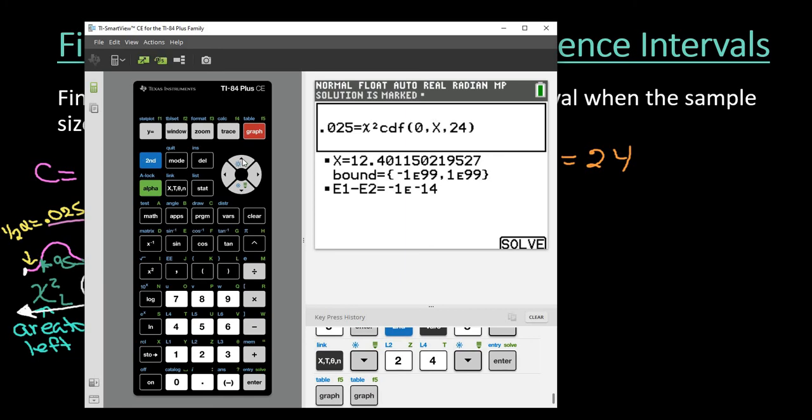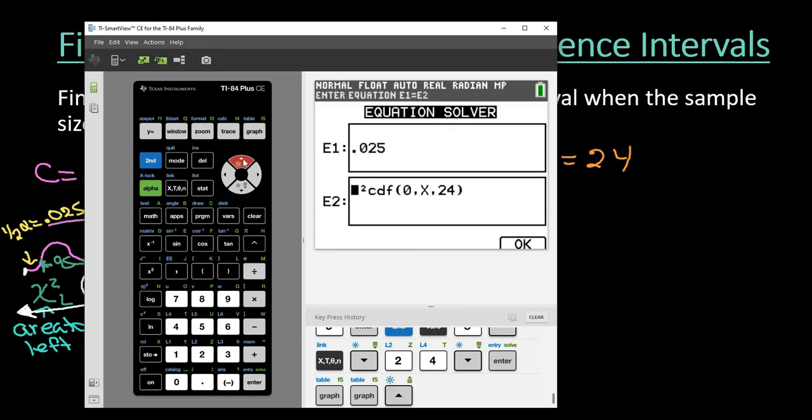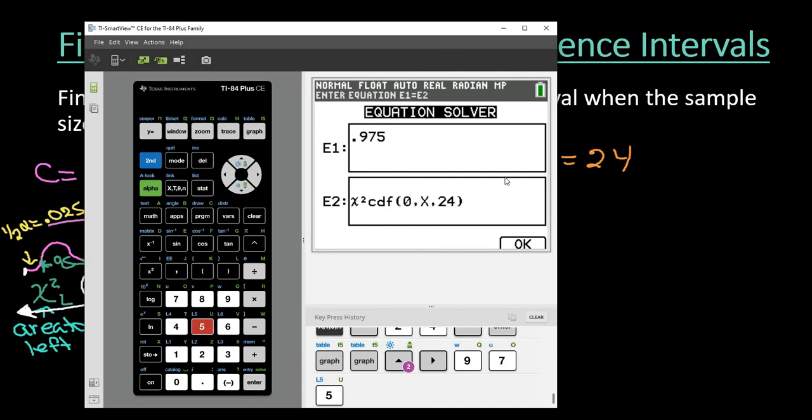And what I can do is I can just hit the up button and it'll go to the last place that I was at. And then I can come up here and I can change that 0.025 to 0.975.